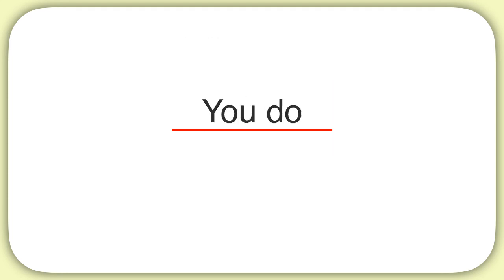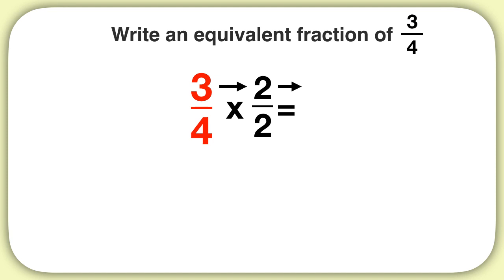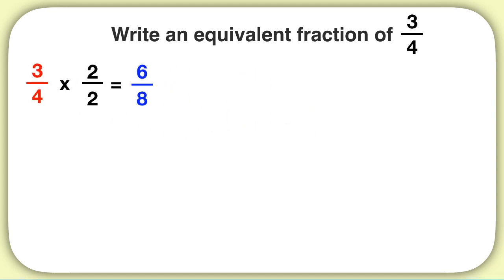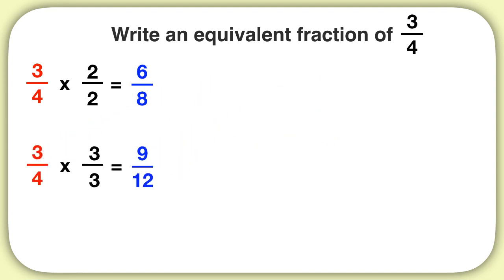Now it's time for you to try on your own. Write an equivalent fraction of 3 fourths. You could have taken 3 fourths and multiplied by 2 over 2: 3 times 2 is 6, and 4 times 2 is 8 — that's one equivalent fraction. Or you could have done 3 fourths times 3 over 3: 3 times 3 is 9, and 4 times 3 is 12, giving 9 twelfths.